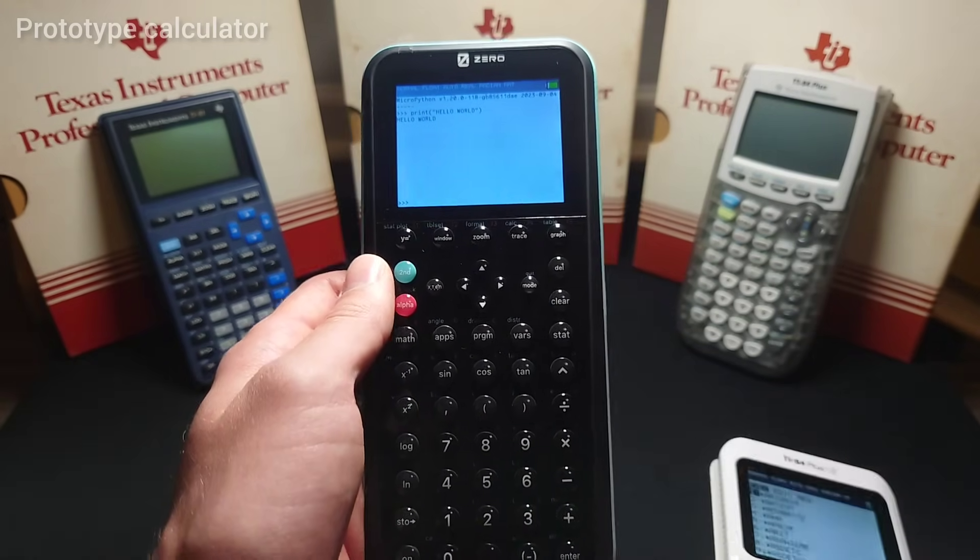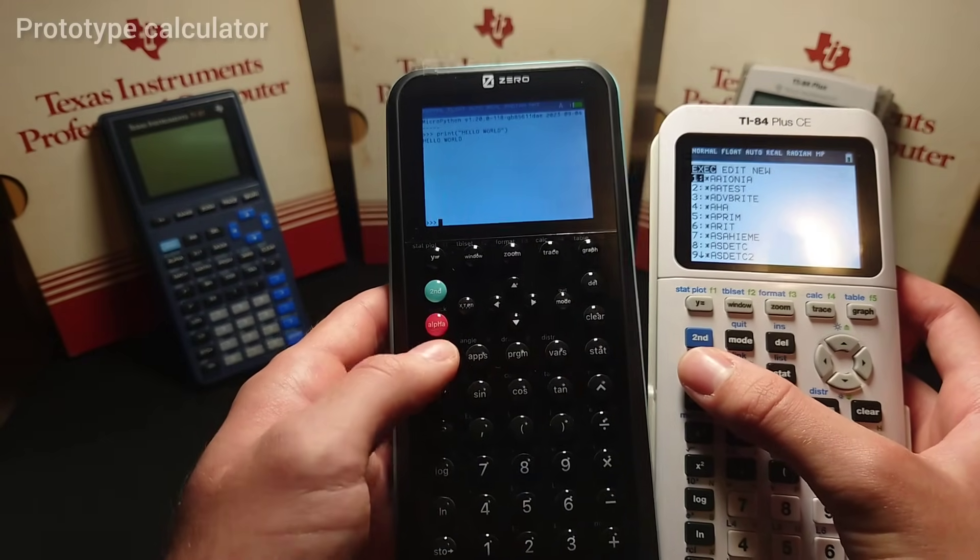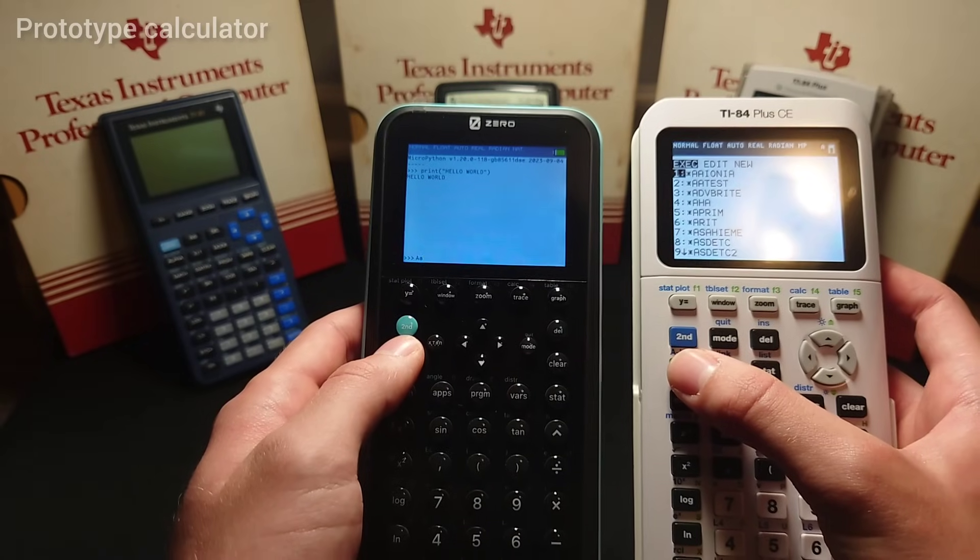Another thing I can mention, is that zero also supports lowercase letters right out of the box. We can do capital A, we can do lowercase a. It doesn't matter, TI-84 plus CE can only do capital letters.